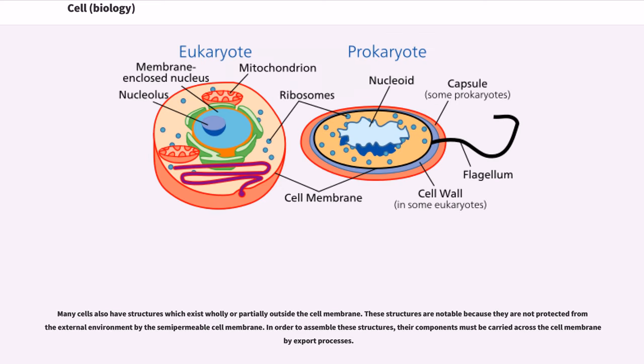Many cells also have structures which exist wholly or partially outside the cell membrane. These structures are notable because they are not protected from the external environment by the semi-permeable cell membrane. In order to assemble these structures, their components must be carried across the cell membrane by export processes.